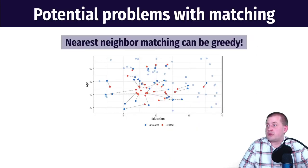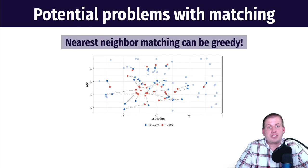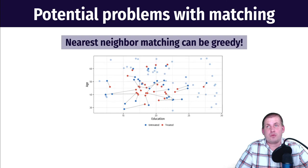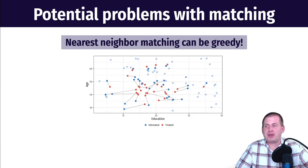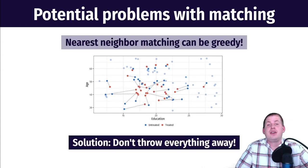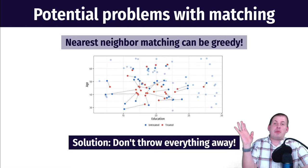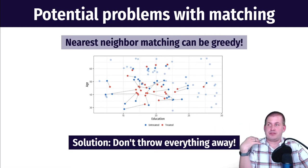A potential problem with greedy one-to-one nearest neighbor matching is that you throw away a lot of data. If you already have a small observational dataset, you might lose half your data, making any finding statistically insignificant. So you don't always want to match this way, especially if you don't have a large sample. The solution is to not throw everything away — and that's where we get into methods that let you keep all your data, specifically inverse probability weighting.